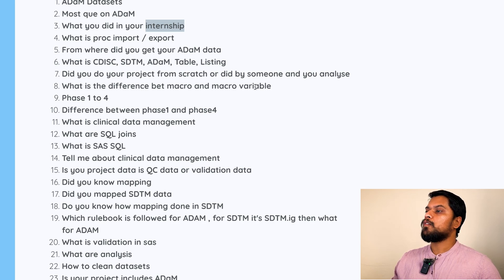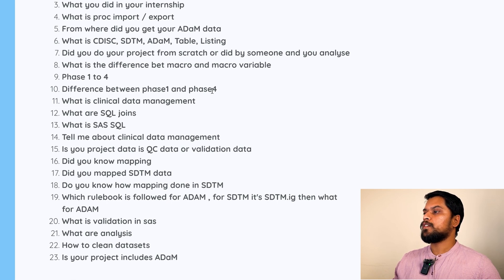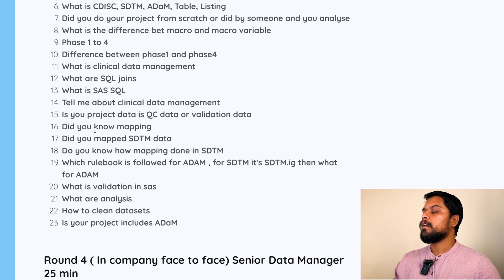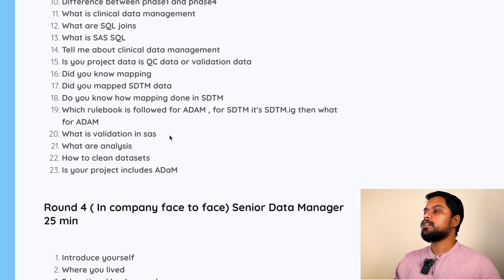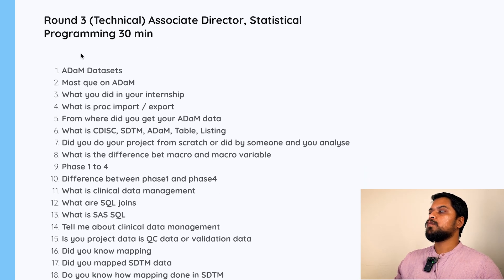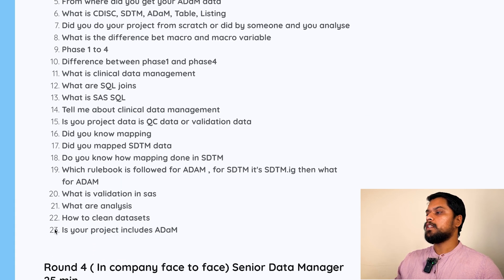What are the differences between a macro and a macro variable? Clinical trial phases 1 to 4 — difference between each phase. What is clinical data management? What are SQL joins? What is SAS SQL? Is your project data QC data or validation data? Did you know mapping? Did you map the SDTM data? How is mapping done in SDTM? Which rulebook is followed for ADAM? For SDTM, SDTM-IG — then what for ADAM? What is validation in SAS? What are analyses? How do you clean the data? Does your project include ADAM? This is how round 3 was completed with 23 questions.